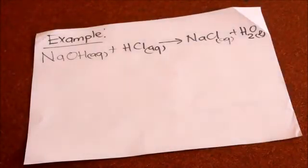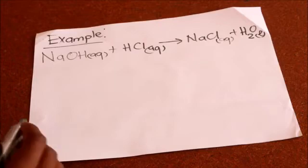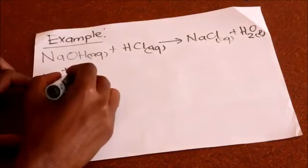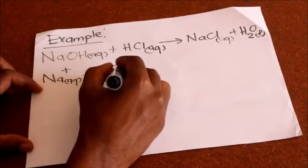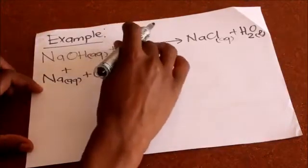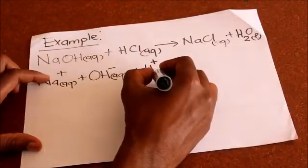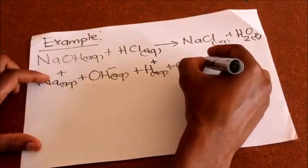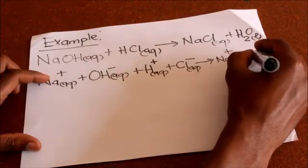We need to show the ions, and we only show ions for compounds in the aqueous state, because in aqueous state the ions are mobile. For sodium hydroxide we have Na⁺(aq) plus OH⁻(aq). For hydrochloric acid, it is an acid — when dissolved in water it donates H⁺ — so we have H⁺(aq) plus Cl⁻(aq). For NaCl we write Na⁺(aq) plus Cl⁻(aq). Water is in the liquid state, so we do not dissociate it; we write it as H₂O(l).